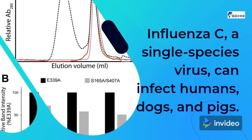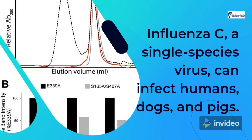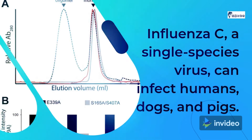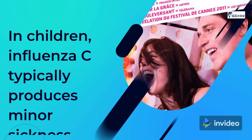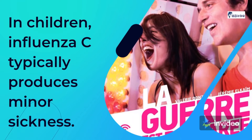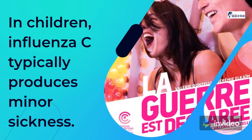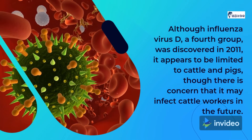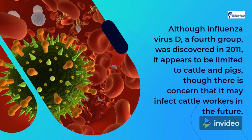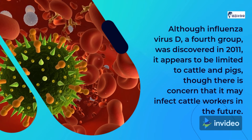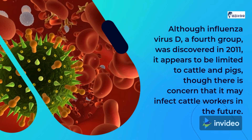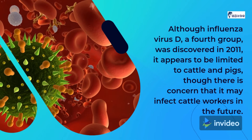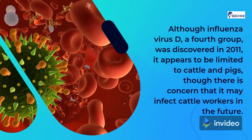Influenza C, a single species virus, can infect humans, dogs, and pigs. In children, Influenza C typically produces minor illness. Although Influenza virus D, a fourth group, was discovered in 2011, it appears to be limited to cattle and pigs, though there is concern that it may infect cattle workers in the future.